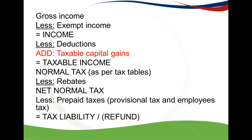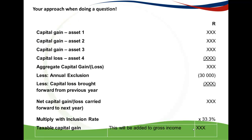To calculate taxable capital gains, you need to follow this framework. You are going to calculate either a capital gain or loss on every asset that was disposed of during the current year of assessment. If there was a disposal, you will calculate a capital gain. You then add up all of your gains and losses together to get to something called your aggregate capital gain or loss.